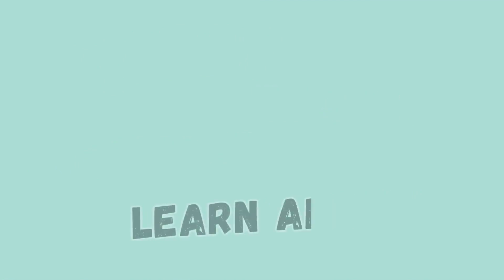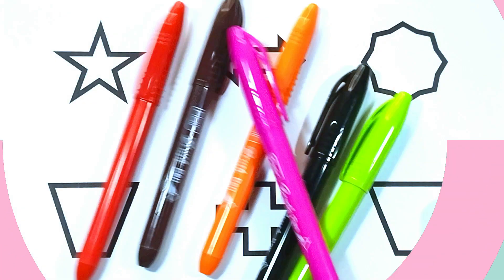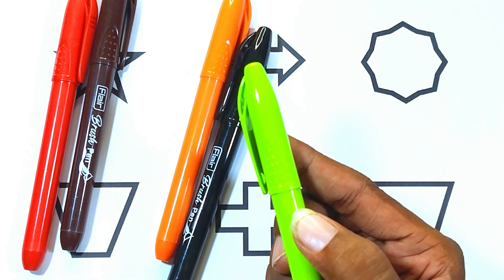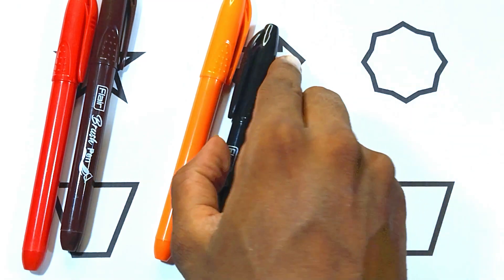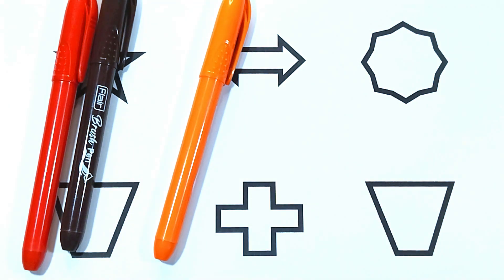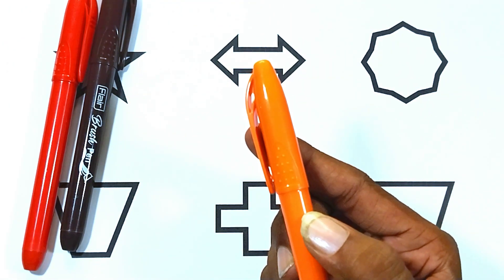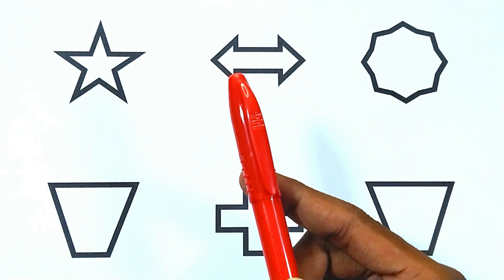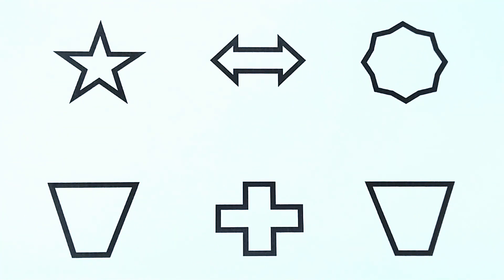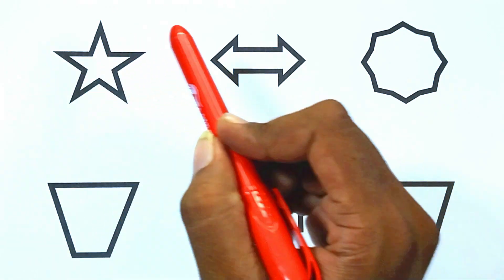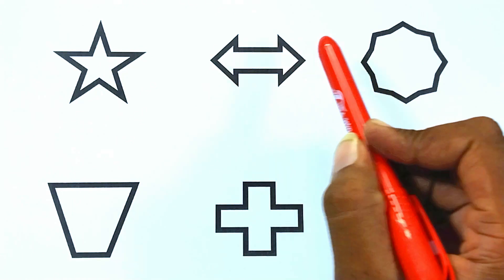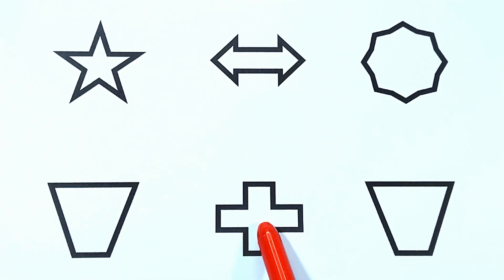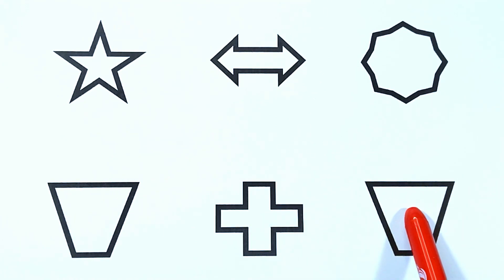Today we are going to learn about some shapes and colors. The colors are pink color, green color, black color, orange color, brown color, and red. The shapes are star, double arrow, octogram, trapezoid, cross, and trapezoid.